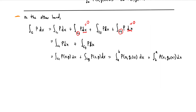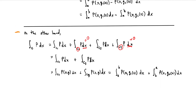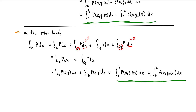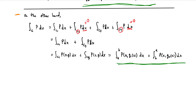We're almost there — these statements look very similar. Comparing the double integral result with the path integral result, the only difference is that the C3 integral goes from b to a instead of a to b. But if you reverse the limits you always get a minus sign — this has become a calculus 1 integral. So these two are definitely equal. We get: integral a to b of P(x, g1(x)) dx, minus integral a to b of P(x, g2(x)) dx.